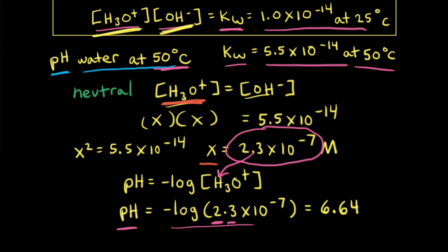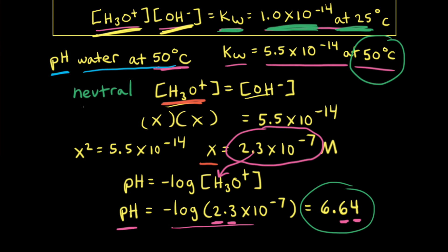Notice that with two significant figures for the concentration, we get two decimal places for our answer. If we had used Kw equal to 1.0 times 10 to the negative 14th, we would have gotten a pH of 7.00, but that's only true at 25 degrees Celsius. Since Kw is temperature dependent, if the temperature is something other than 25 degrees Celsius, the pH of water will not be 7. In this case, the pH of pure water is 6.64 at 50 degrees Celsius. However, water is still a neutral substance — the concentration of hydronium ions is equal to the concentration of hydroxide ions.